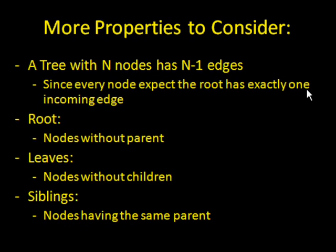There are some other properties you can consider. A tree with N nodes, N being a number, generally has N minus one edges. That is, edges being the connecting points on the tree. This makes sense because every node except the root has exactly one incoming edge to it. A root means the nodes without a parent. Leaves means nodes without children. Siblings means nodes that have the same parent.